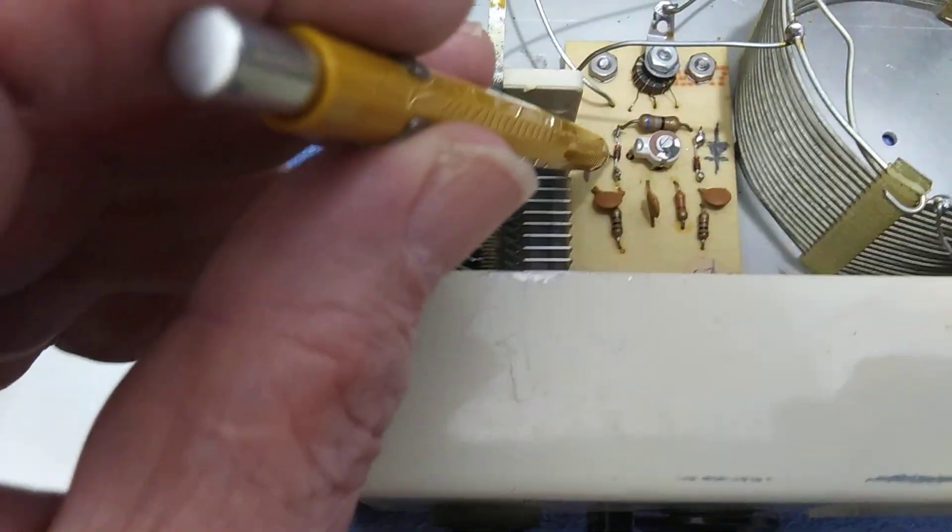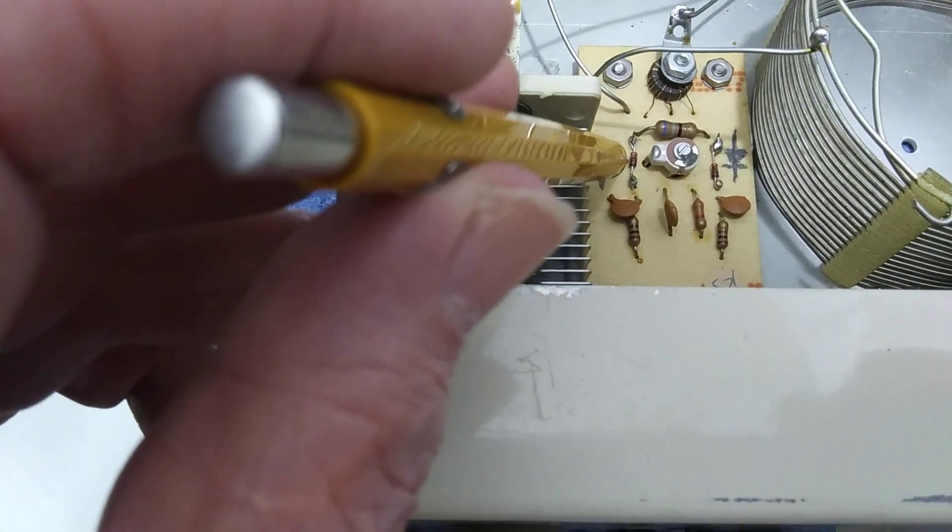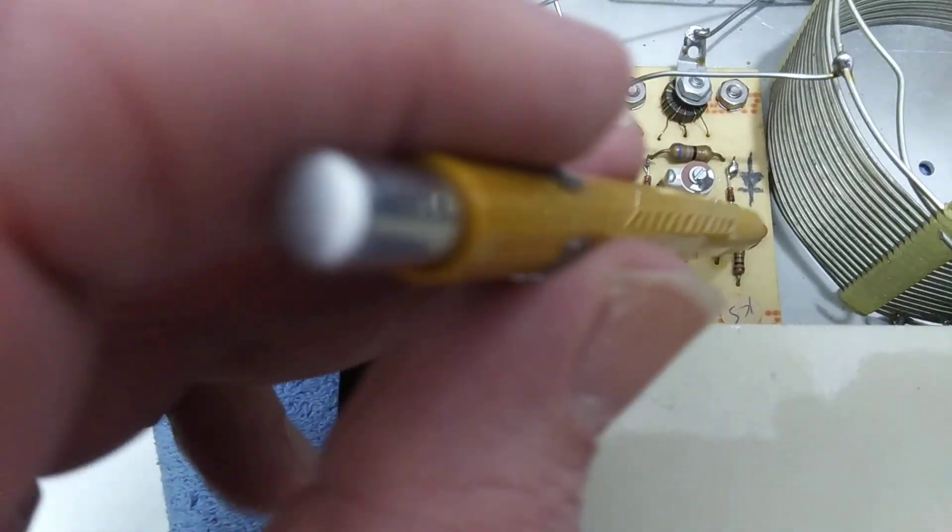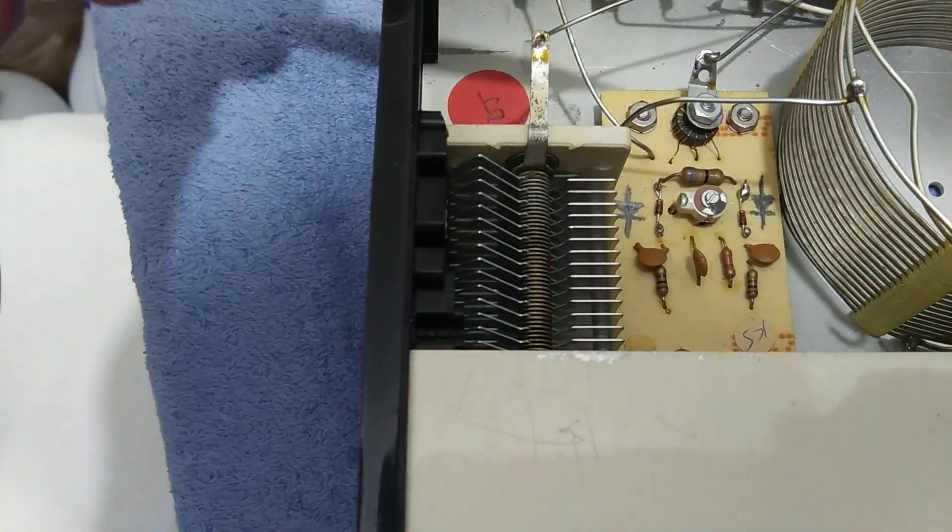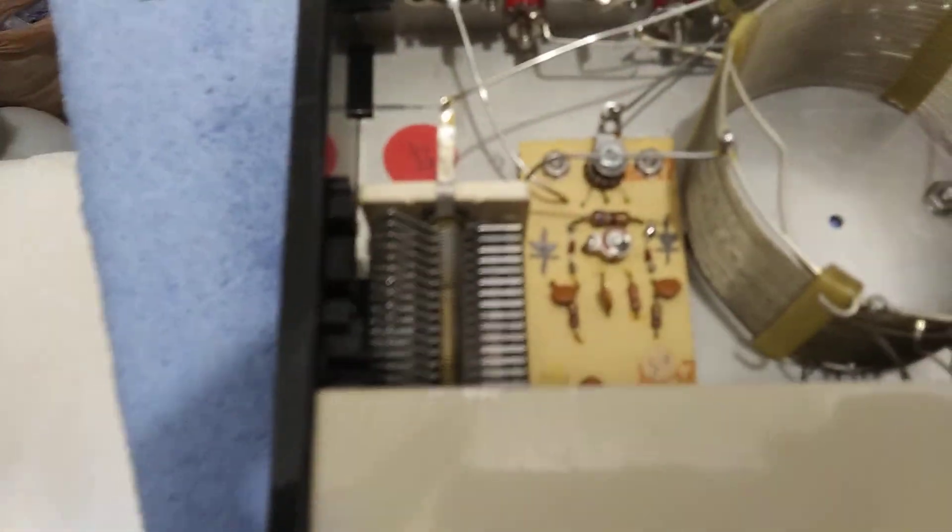I clipped off the old diodes very close to the components so the leads were left in the circuit board. You then scrape those leads nice and clean so they'll take solder, and you tack solder the new diodes onto the old diodes' leads from up top.